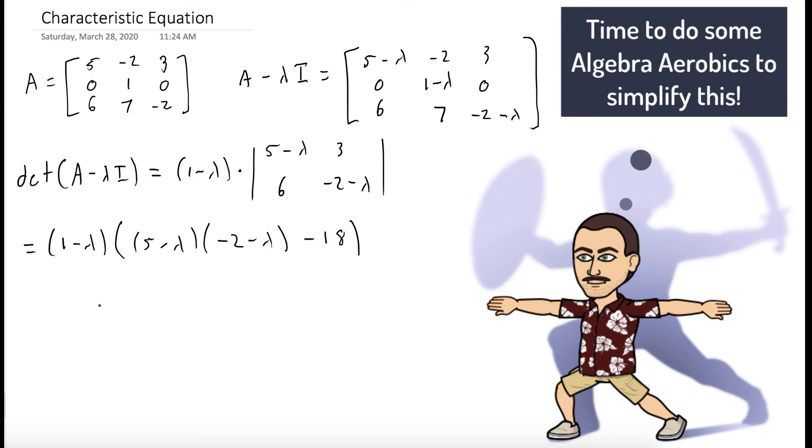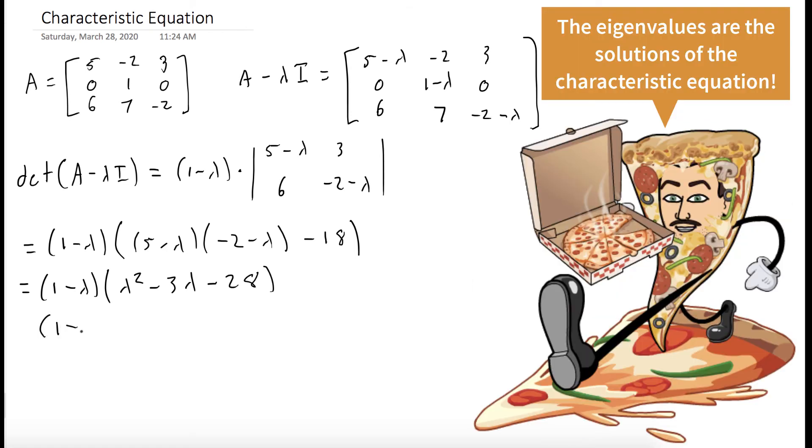And now what we'll do is we'll just simplify this equation. So we'll still have our factor of 1 minus lambda. And this becomes lambda squared minus 3 lambda minus 28, which we could factor to 1 minus lambda times lambda minus 7 times lambda plus 4. And since it's our characteristic equation, we set it equal to 0.